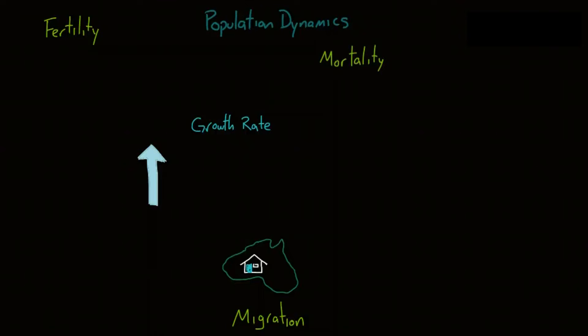Which brings us to our third factor, mortality, which is the fact that everyone eventually will die. This, obviously, decreases the population.